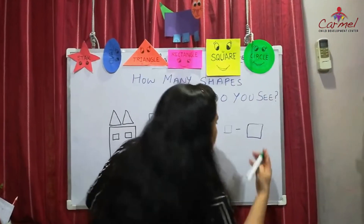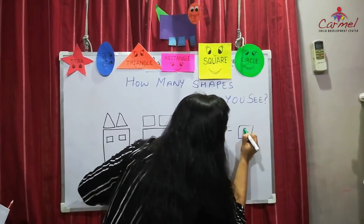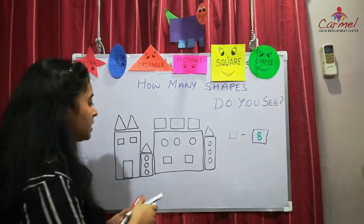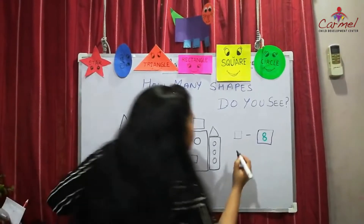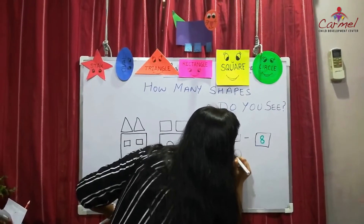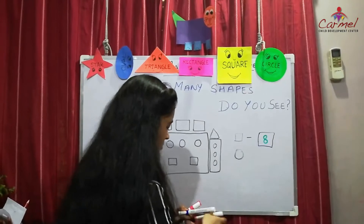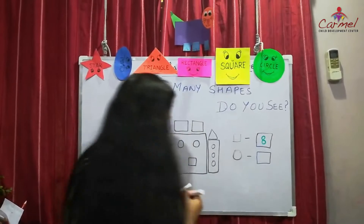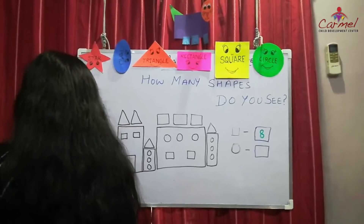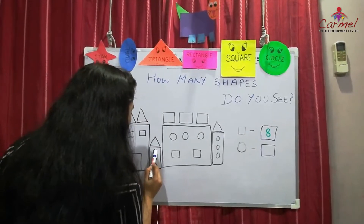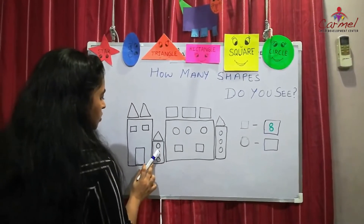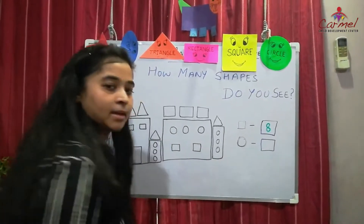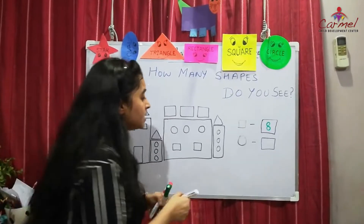Now let's find out how many circles are in the picture. Let's count: one, two, three, four, five, six, seven, eight, nine. There are 9 circles. You have to write 9.